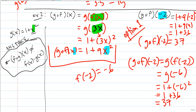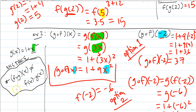We get the same answer whether we plug the number in step by step or directly into the composite function. Option 1 and Option 2 should always give the same answer. Important: f of g of x is not the same as multiplying f and g. That would be f times g of x. The small circle does not mean multiply — it means composite function, plugging one function into another.